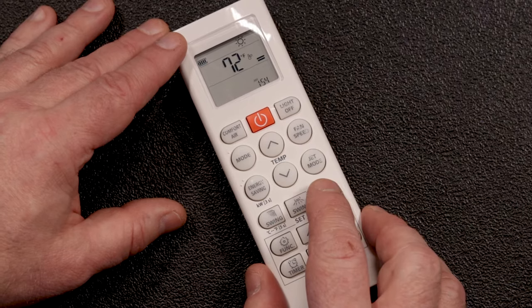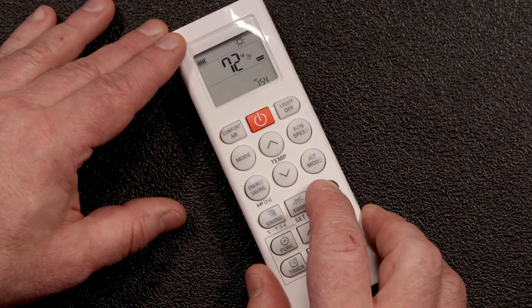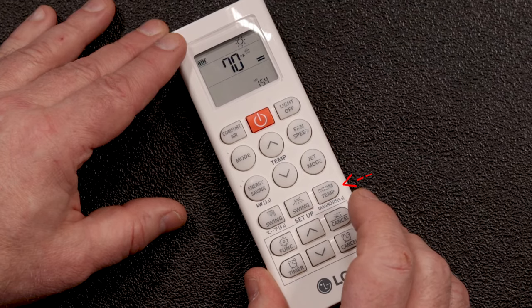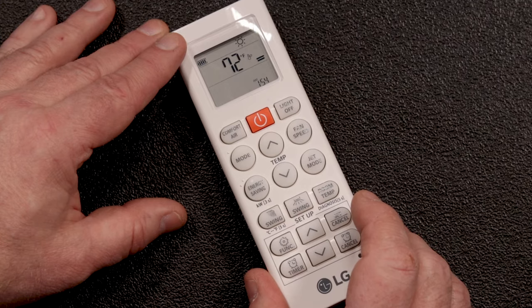To see the temperature at the remote, press the room temp button. You'll notice that this temperature may be a few degrees different than your target setting. This is normal. We recommend adjusting the set point to a temperature at which you're comfortable, even if it's a few degrees different than your previous thermostat settings.